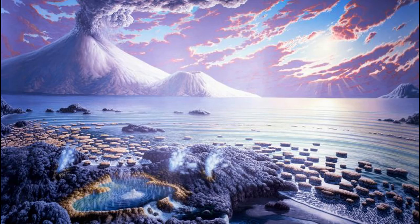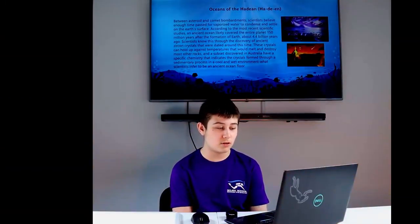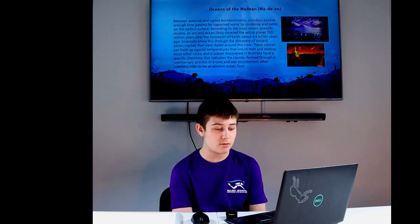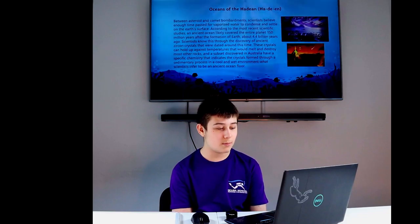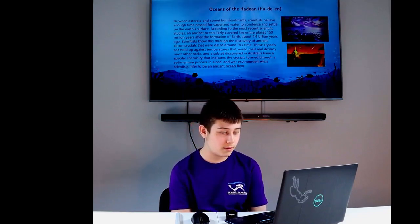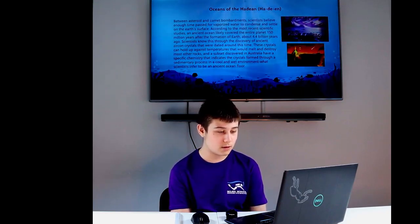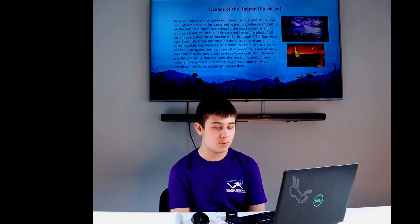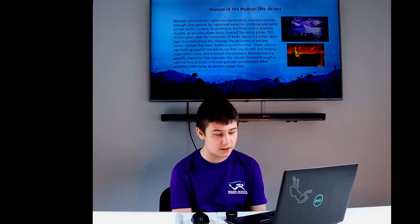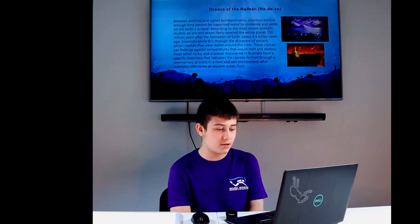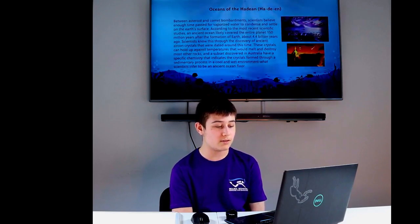Between asteroid and comet bombardments, scientists believe enough time passed for vaporized water to condense and settle on Earth's surface. According to the most recent scientific studies, an ancient ocean likely covered the entire planet 150 million years after the formation of Earth, about 4.4 billion years ago. Zircon crystals dated around this time can hold up against temperatures that would melt most other rocks. Their specific chemistry indicates they formed through a sedimentary process in a cool, wet environment, what scientists inferred to be an ancient ocean floor.